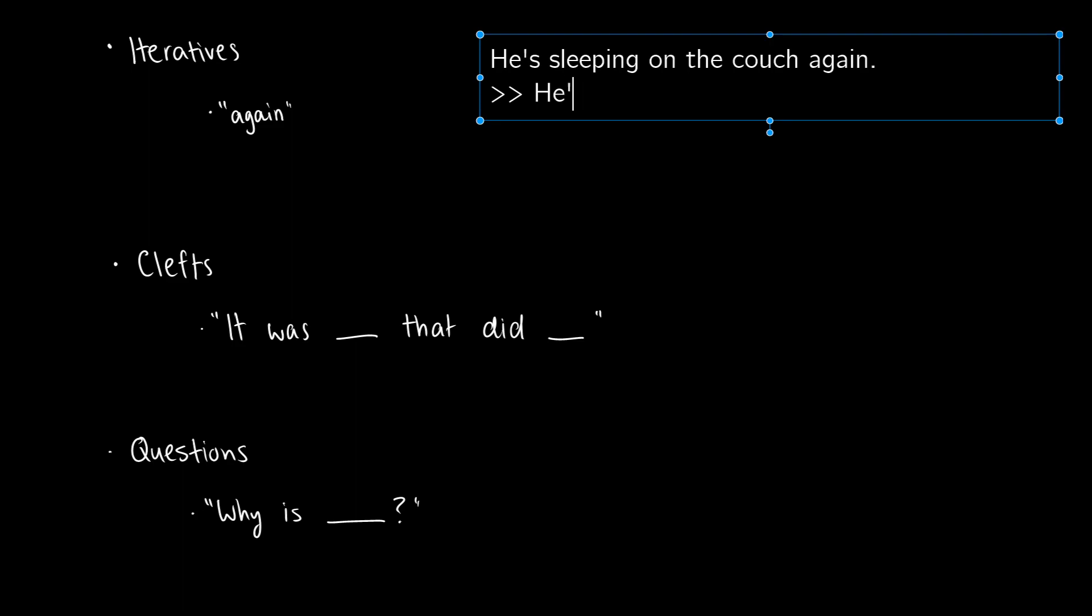This presupposes that he's slept on the couch before, because if you say the word 'again', it's understood that the event had already happened. If it was just happening for the first time, you wouldn't be saying 'again'.